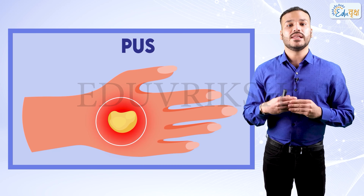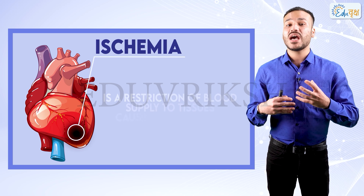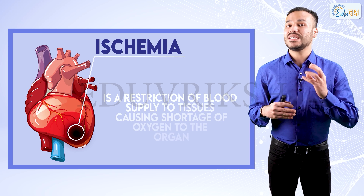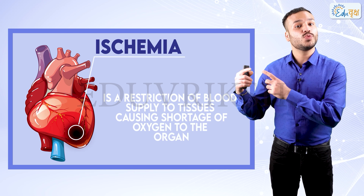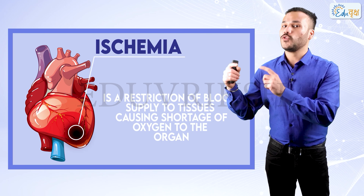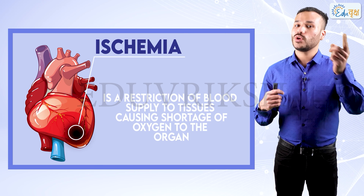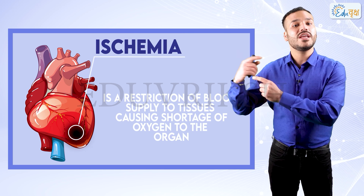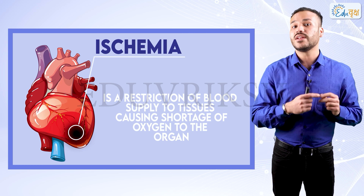If there is ischemia — do you remember what ischemia is? We studied it during cell injury. When there is reduced oxygen level in any organ or tissue, the blood flow is reduced. So if the blood flow is reduced, then healing will be delayed, because blood provides nutrition to the cells. If the cells don't get nutrition, then they cannot divide easily.